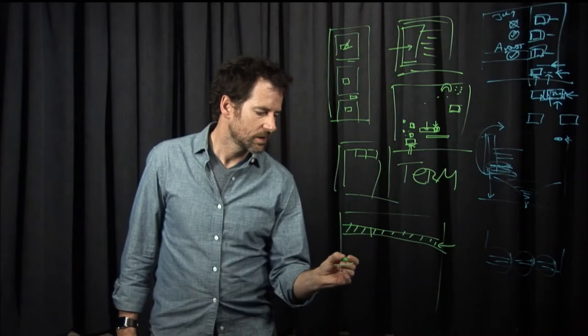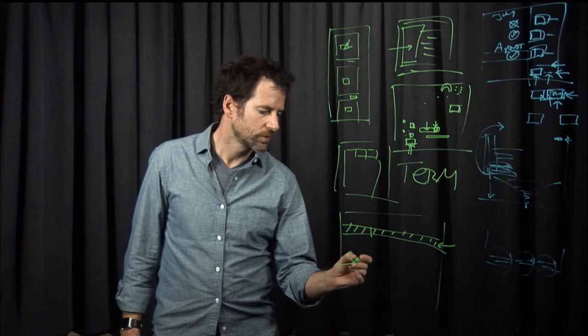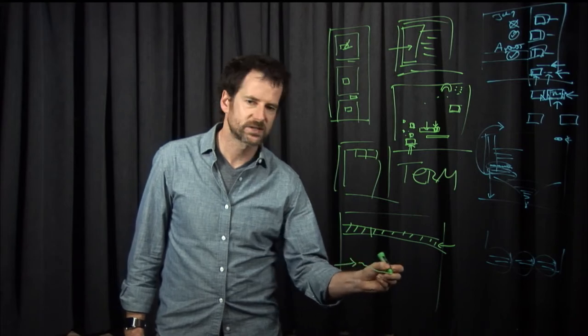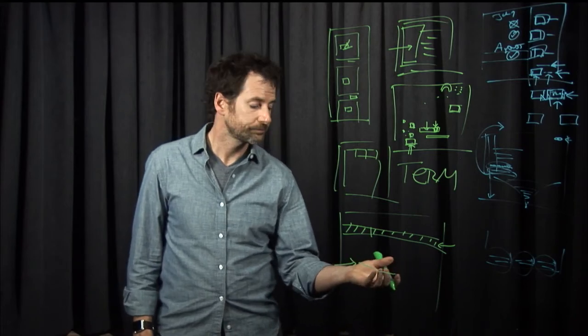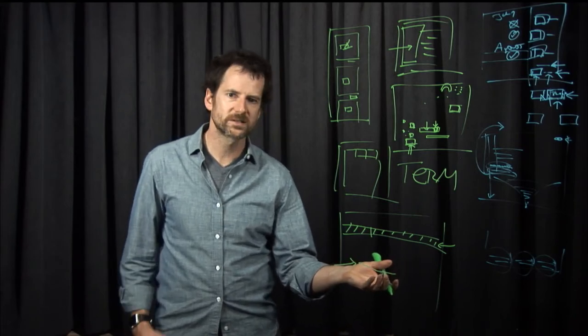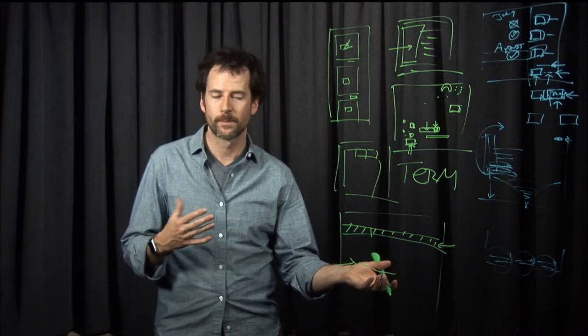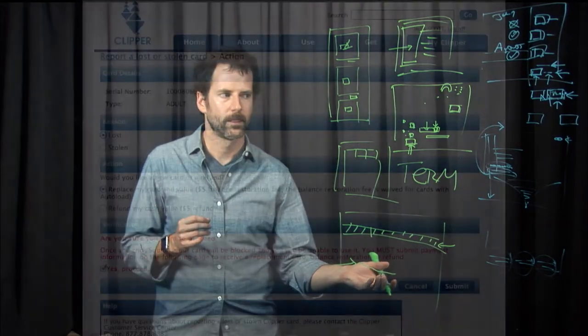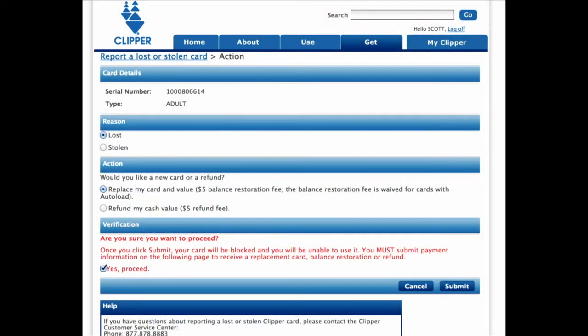You'll see there's an 'are you sure you want to proceed' section where the text is all in red. Usually, when text is in red, it means that something bad is happening.